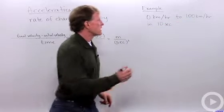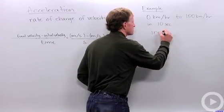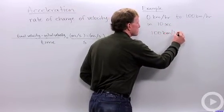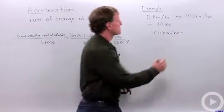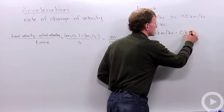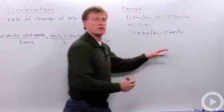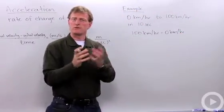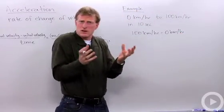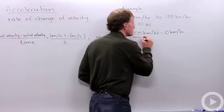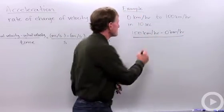I need to take my final velocity, 100 km per hour, minus my initial velocity, 0 km per hour. Remember to include your units. Sometimes you can get confused if you drop your units and you don't know what you're talking about. So we've got that over 10 seconds.